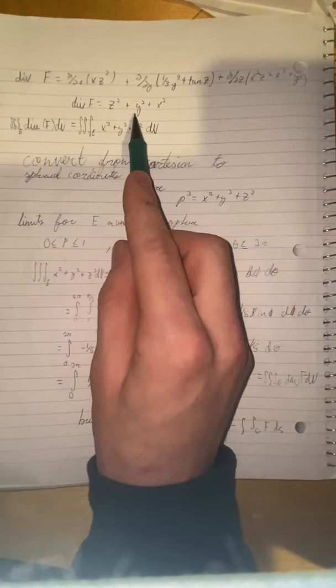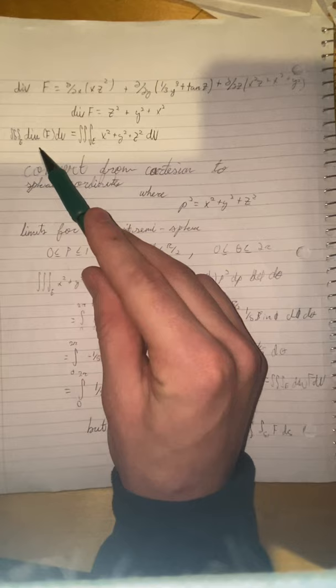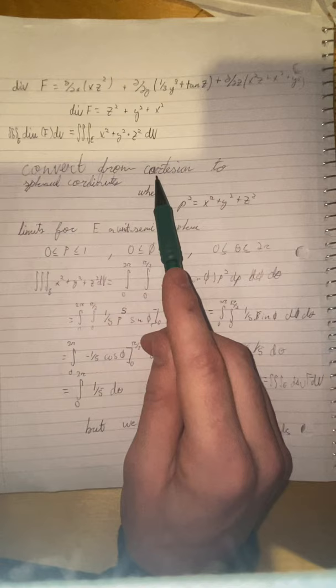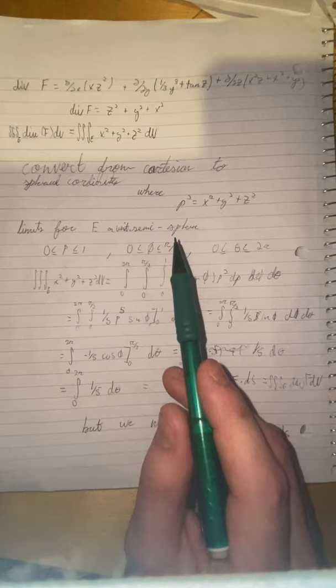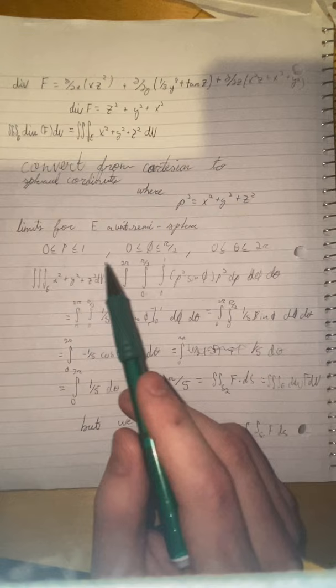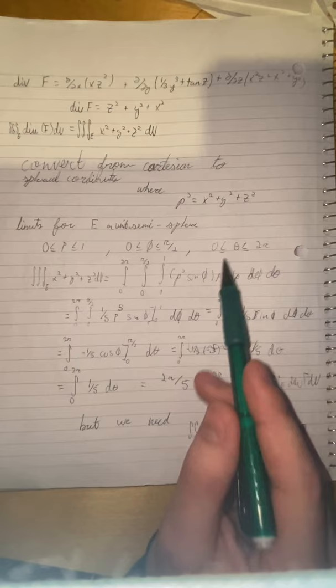So then you're going to plug that into the triple integral of div f dv. And then we're going to convert it from Cartesian to spherical coordinates. So then you have rho squared equals x squared plus y squared plus z squared. And then your limits are going to be of that of a unit semisphere, which is pretty easy, from rho from zero to one, phi from zero to pi over two, and theta from zero to two pi.